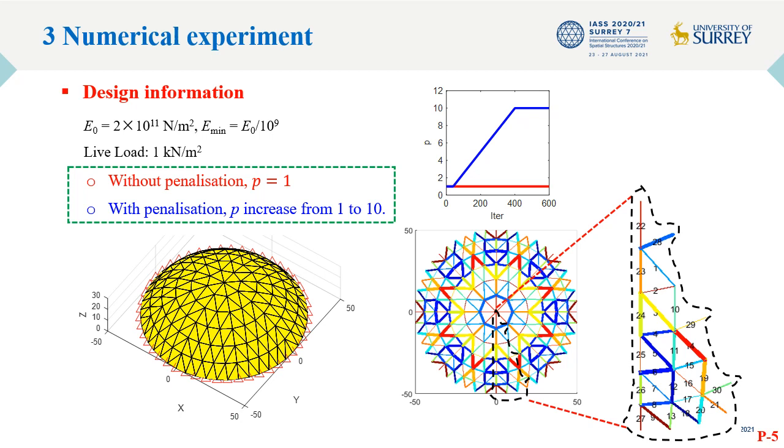In the first example, the structure is optimized with a constant penalization factor, p equal to 1. In the second example, the penalization factor gradually increased from 1 to 10 as the iterations progressed.